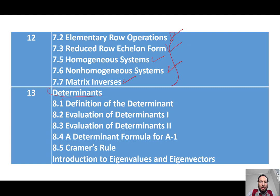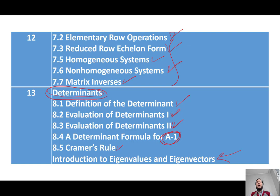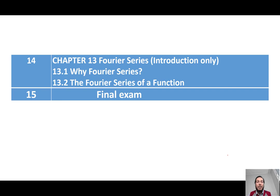We'll also cover matrix inverses, determinants — including the definition and evaluation of the determinant, the determinant formula for the inverse matrix A⁻¹, and Cramer's rule. Then we'll discuss eigenvalues and eigenvectors, which are among the most commonly encountered physical phenomena in daily life and can be modeled using mathematical forms.